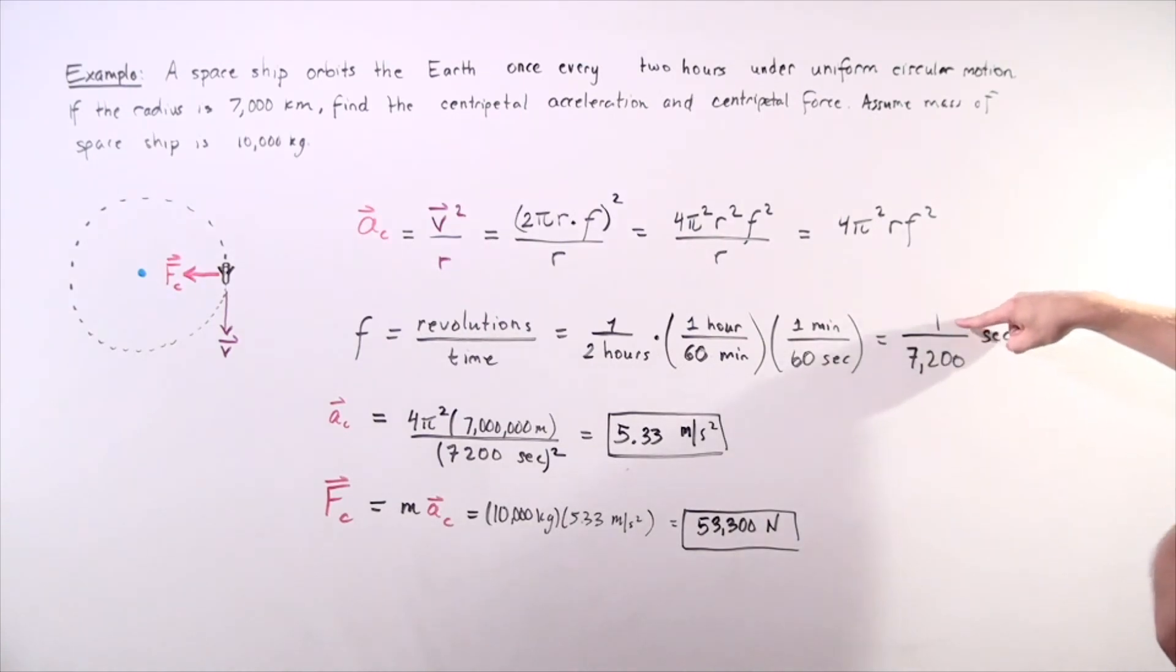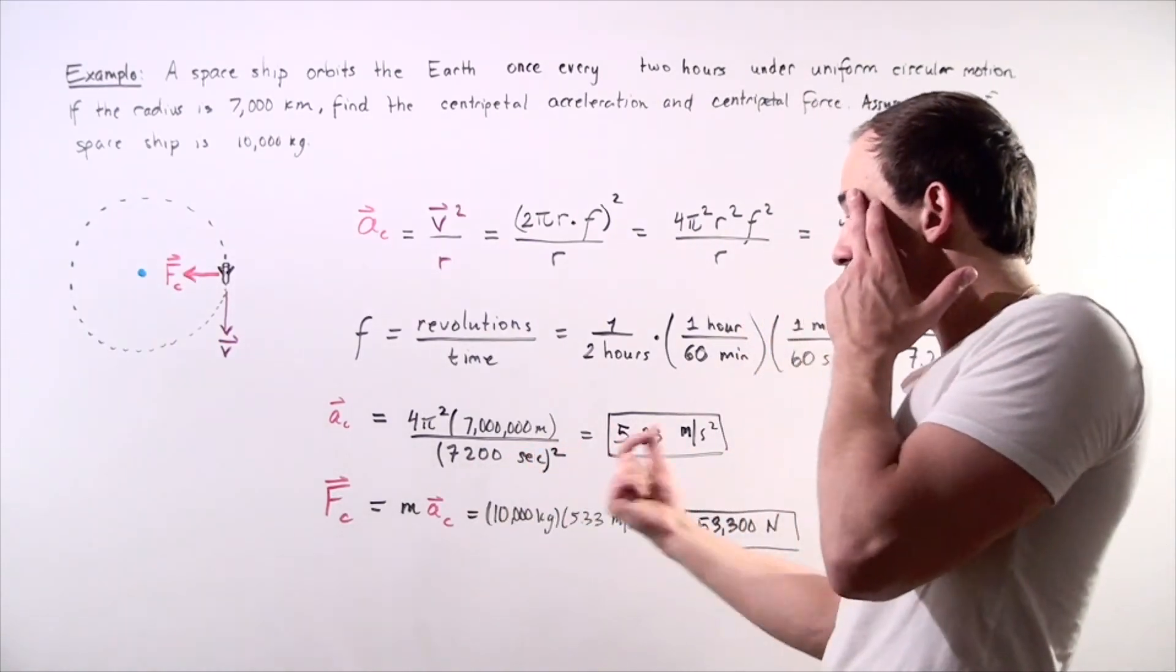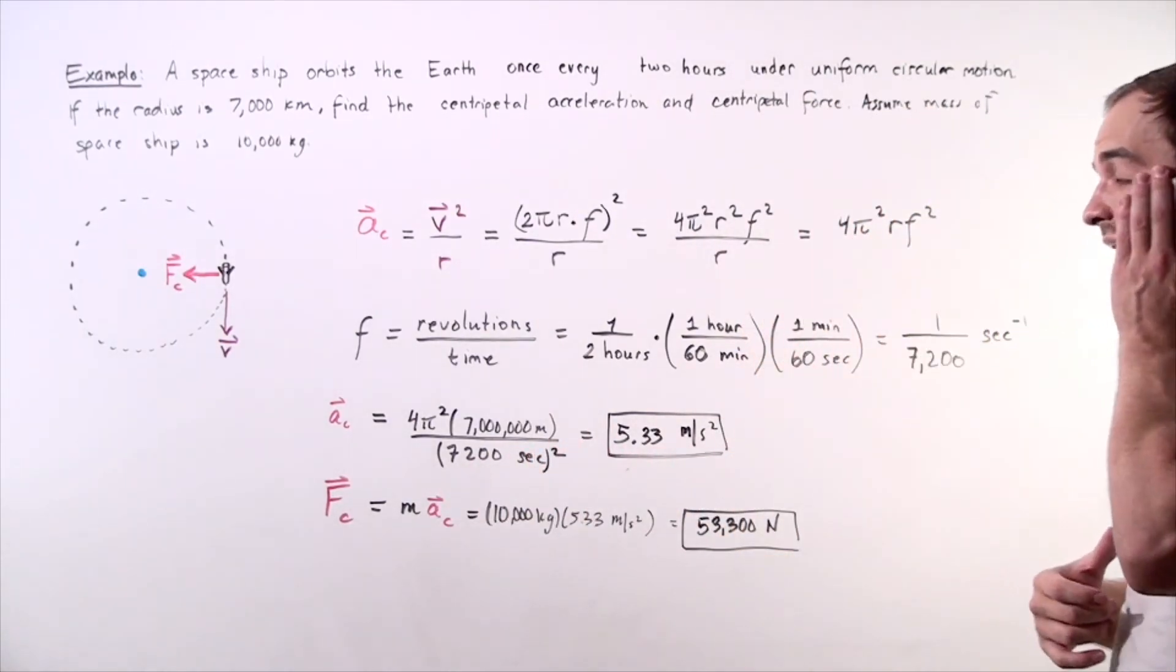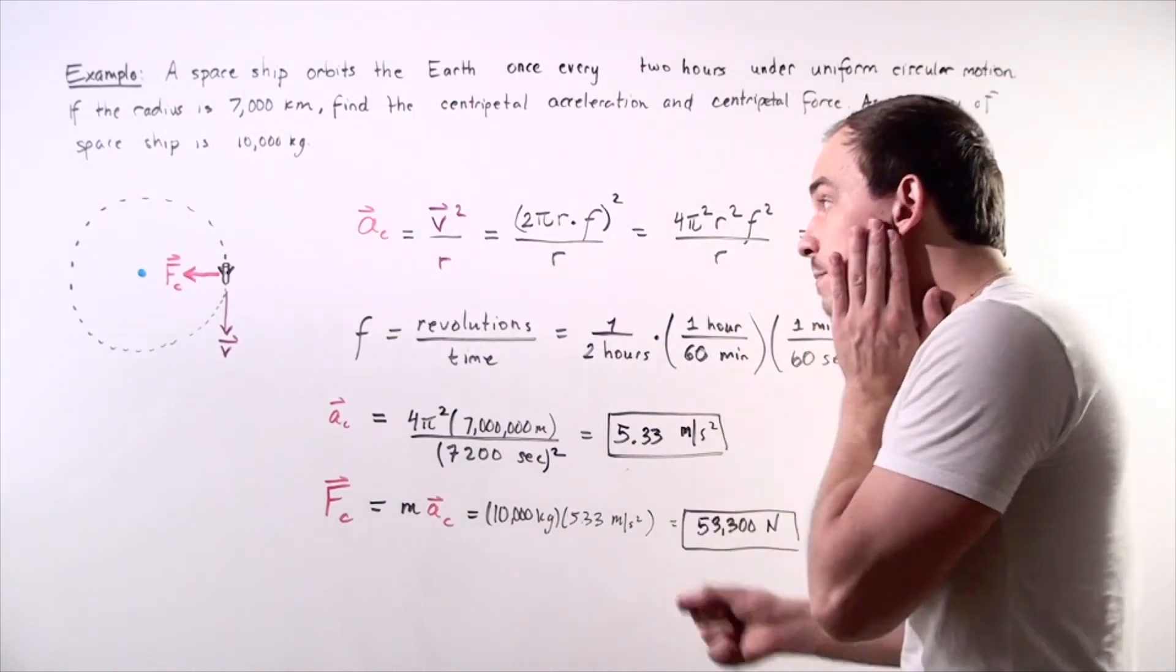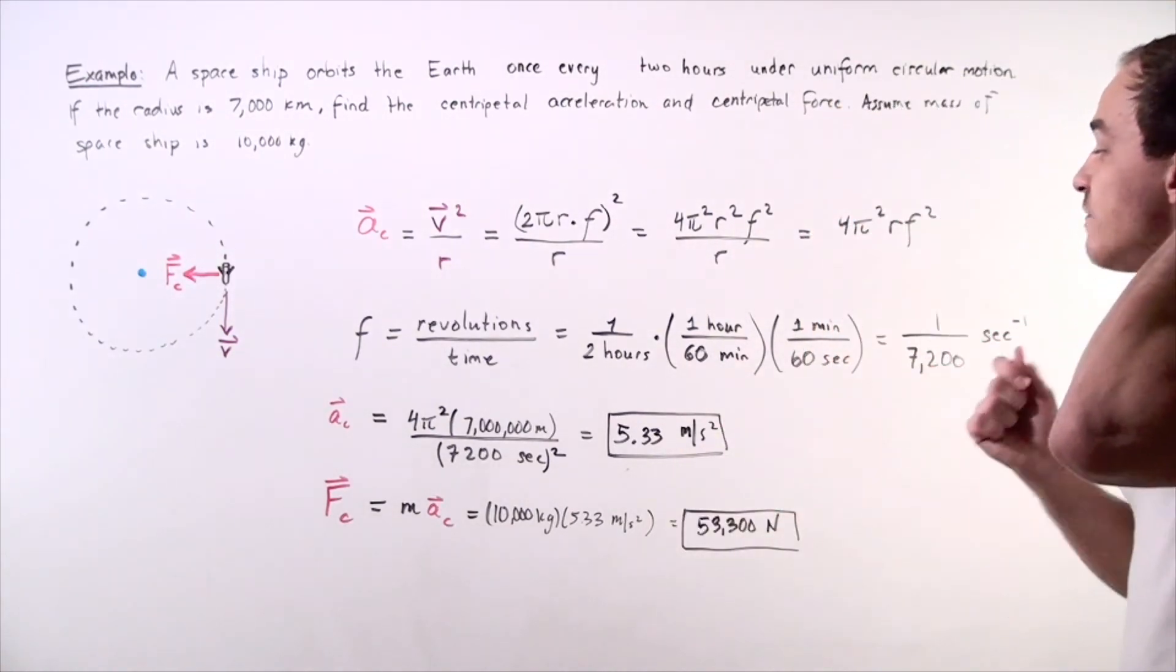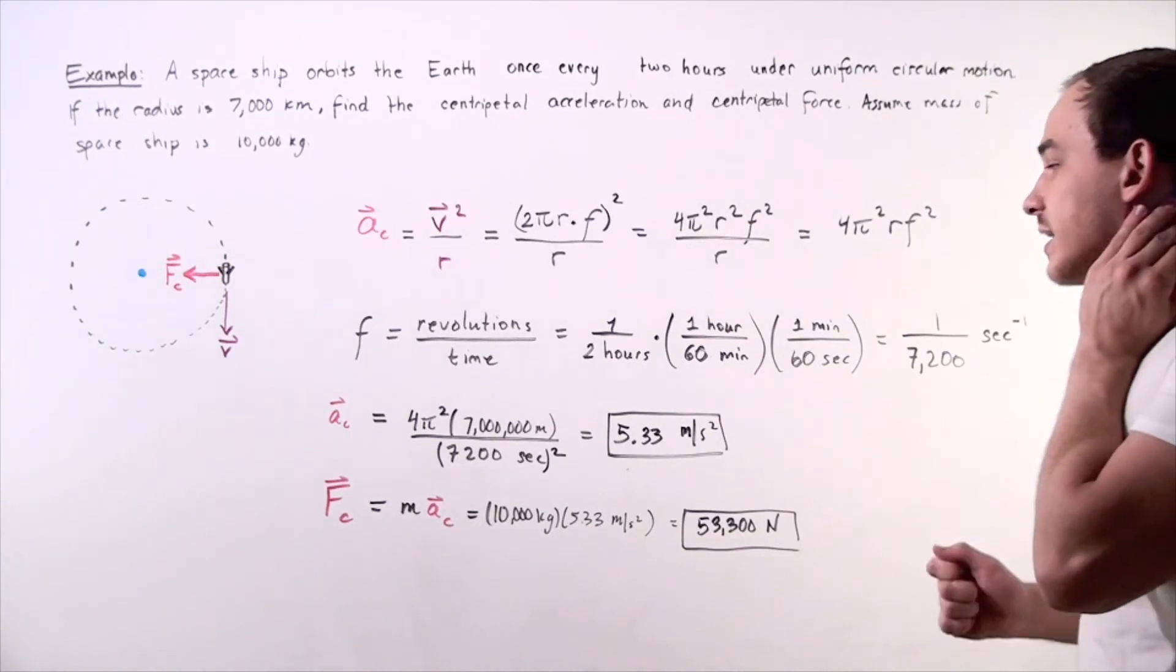The reason that this goes at the bottom is because when we multiply by this number, this ends up being at the bottom. So we square that, we plug it into our calculator, and we find that our radial or centripetal acceleration is 5.33 meters per second squared.